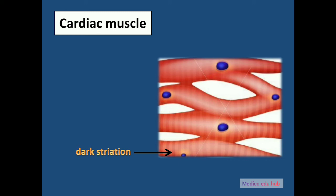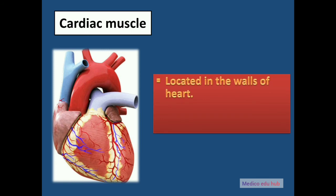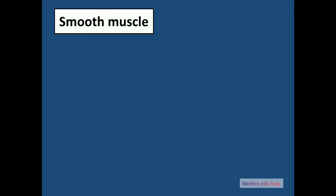Next is cardiac muscle. Cardiac muscle also has striation, but the cells are short and often branched. Cardiac cells contain one or two nuclei and are connected by intercalated discs, which strengthen the connection between cells and allow them to contract as a unit. Cardiac muscle is involuntary and is located in the walls of the heart, functioning to pump blood through the heart.